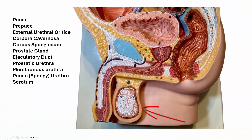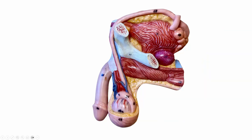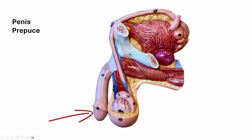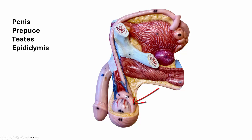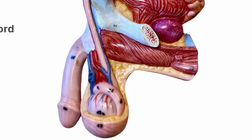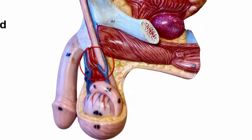Next is the scrotum and a testis. Looking at another part of the model, again we have the penis, the prepuce, the testis, the epididymis, and the spermatic cord.